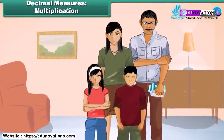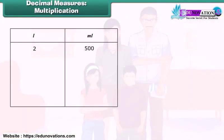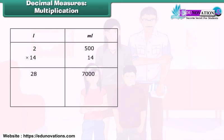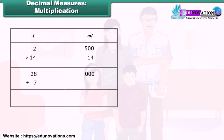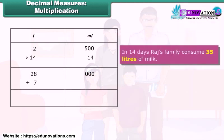Raju's family has a consumption of 2 liters and 500 milliliters of milk per day. How much milk is consumed by this family in 14 days? Multiplying 14 with 2 liters and 500 milliliters, we get 28 liters and 7,000 milliliters. Since 1,000 milliliters equals 1 liter, therefore, 7,000 milliliters equals 7 liters. These 7 liters are added to 28 liters. Thus, in 14 days, Raju's family consumes 35 liters of milk.